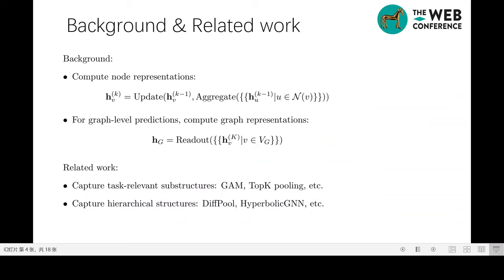We first deal with the first challenge, which requires a general GNN model to be able to express any given subgraph. Before that, let us have a quick look at the GNN background. GNNs follow the message-passing framework to aggregate neighbor's representation to update the representation of the current node. For graph-level predictions, we also need to compute the representation of the entire graph. The readout function is used to do so, which takes node representation as input and outputs the graph representation. We classify existing models in two categories: those who capture task-relevant substructures, and those who capture hierarchical structures.